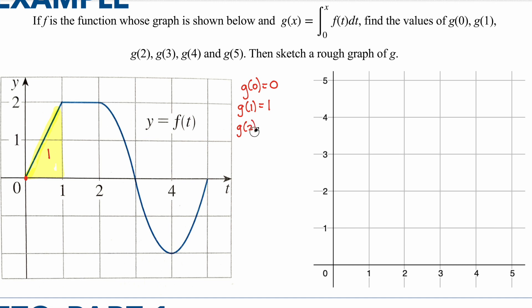g of two is going to be the area starting from zero all the way until you get to two, which means it's the area of g of zero plus the area of g of one plus the area of g of two. Looking at the next piece, this is going to be a rectangle: one times two is two. So g of two is going to be one plus two, which is three.